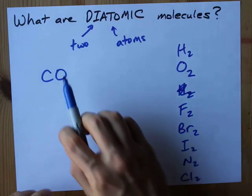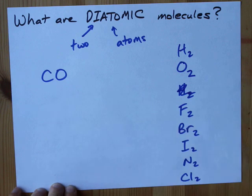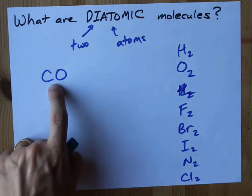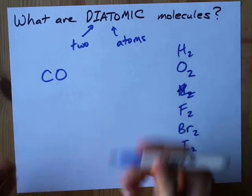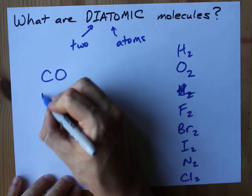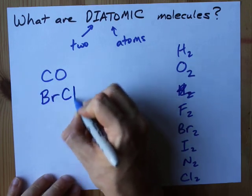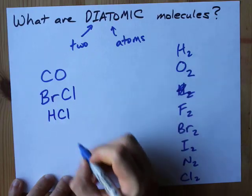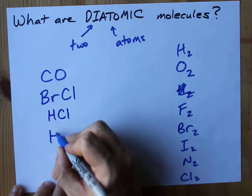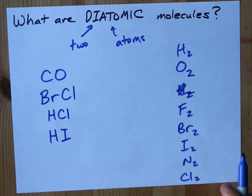There are also other examples of diatomic molecules that aren't just carbon monoxide. Dihalogens are a good example: Br connected to Cl, H connected to Cl, H connected to I, etc.